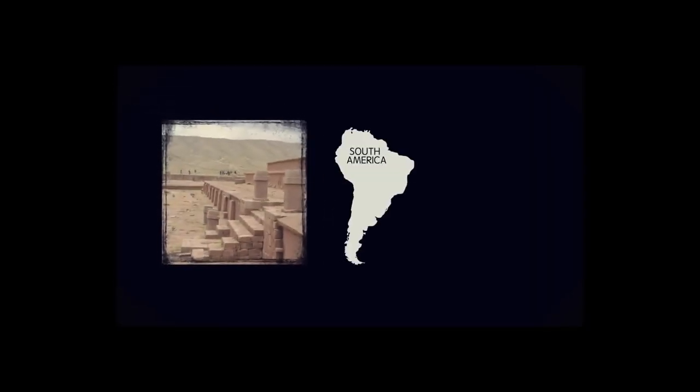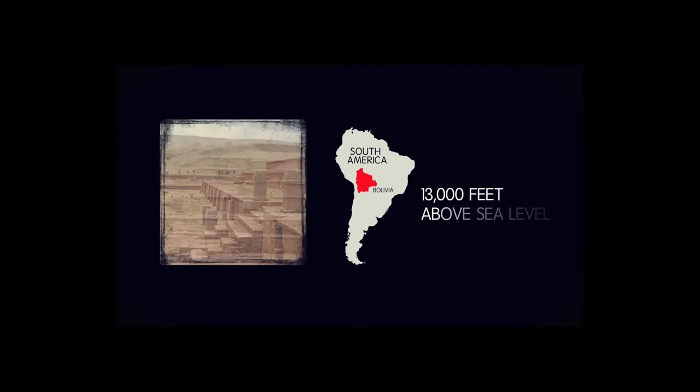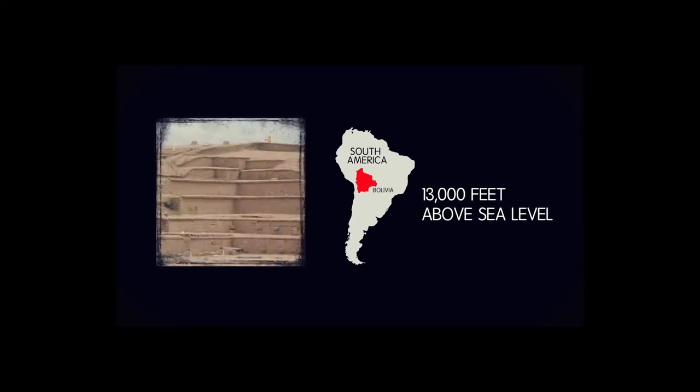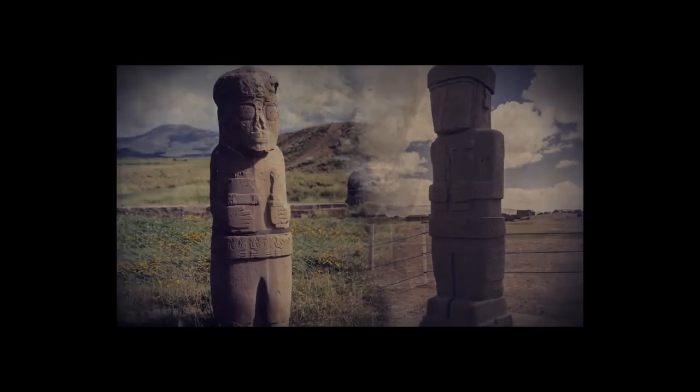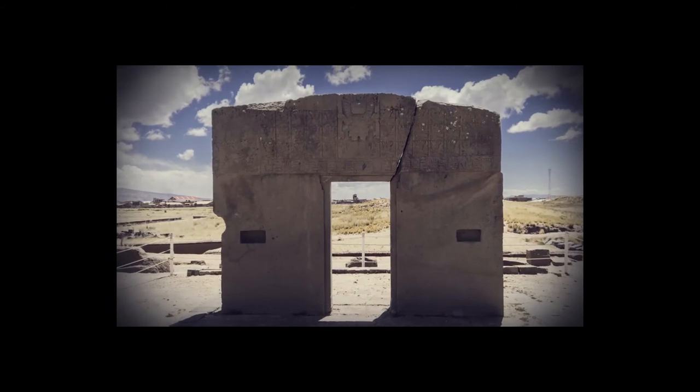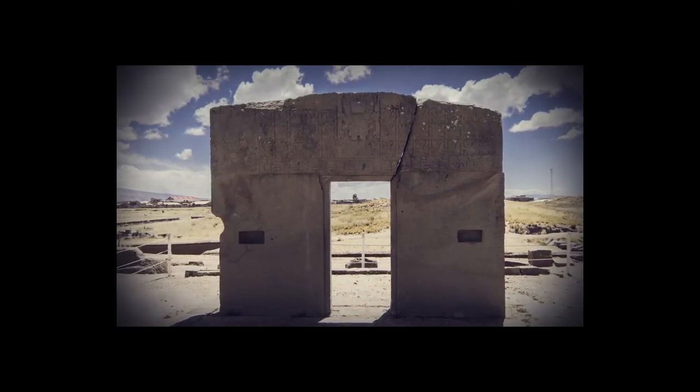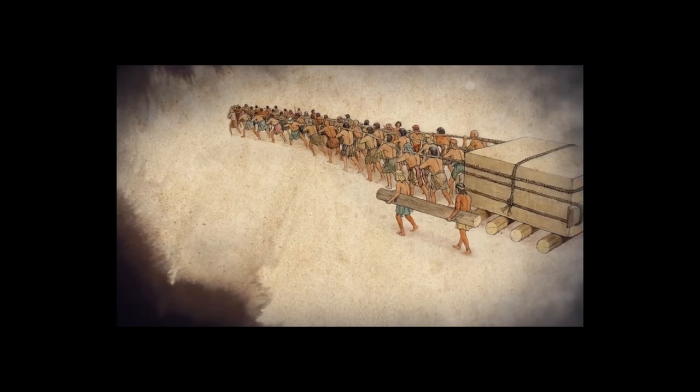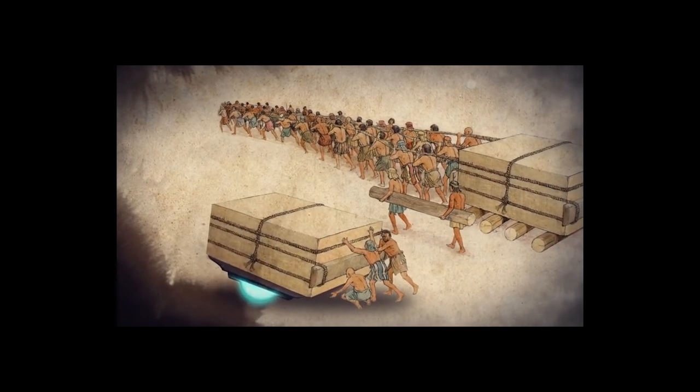The second mystery we'll discuss is the ancient city of Tiwanaku in Bolivia, a city that was high above sea level, roughly 13,000 feet. The people of Tiwanaku utilized massive monolithic stones that weigh up to 450 tons. How the people of Tiwanaku moved these enormous stones remains a mystery. Some suggest the stones were pulled along logs, but others believe aliens may have aided with anti-gravity methods.